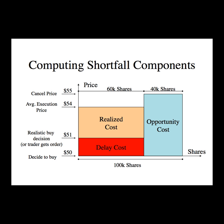This chart shows how you can allocate the different costs geometrically. The areas of these rectangles represent the different cost components. For example, if you wanted to buy 100,000 shares of IBM, you'd plot 100,000 shares on the x-axis and decide to buy at $50 as your base price. If there's some delay or unrealistic decision and IBM rises to $51 by the time a realistic decision is made, that's a $1 change — but we need to finish the story to compute all the costs.